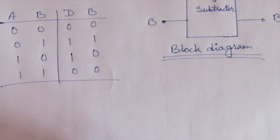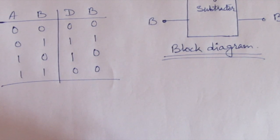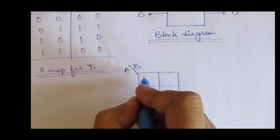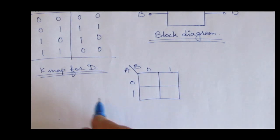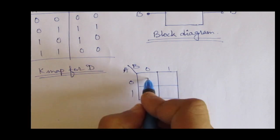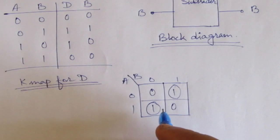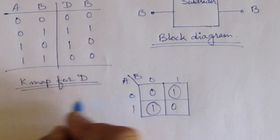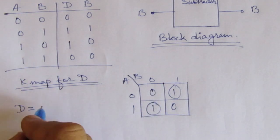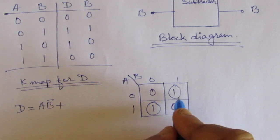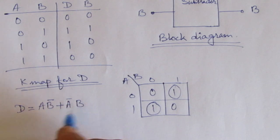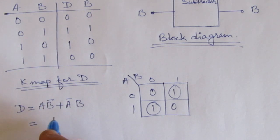Let us first start with the K-map for difference. We have two inputs A and B. From the K-map we can see D values: 0, 1, 1, 0. We get D equal to A·B̄ plus Ā·B. This is the expression for the difference.